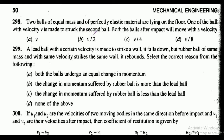Question 298: two balls of equal mass and perfectly elastic material are lying on the floor. One ball with velocity v strikes the second ball. Both balls after impact will move with a velocity — the correct answer is option B, that is v by 2.